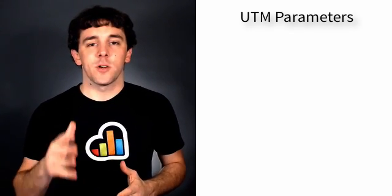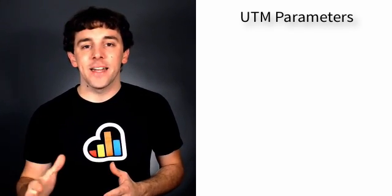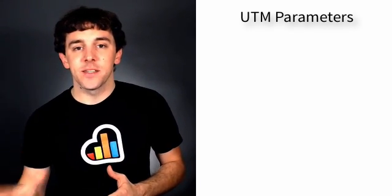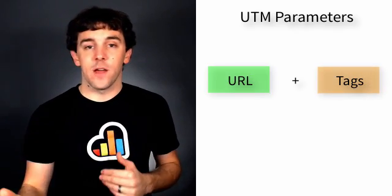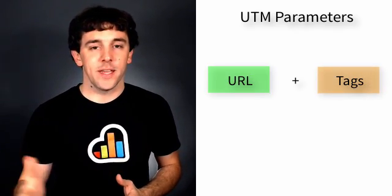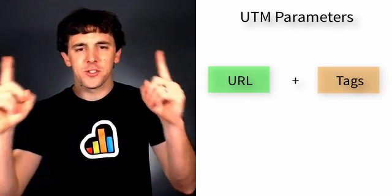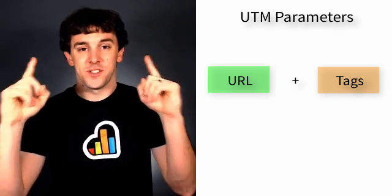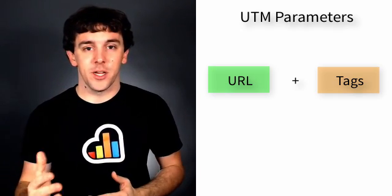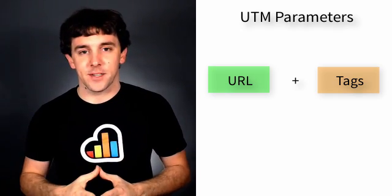So, what is a UTM parameter? UTM parameters are simply tags that are added to the end of a URL. If you've ever been to a website, looked in the address bar, and noticed the URL was very long, it's probably because it was using UTM parameter tags.